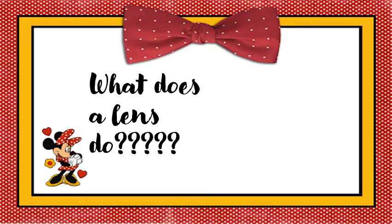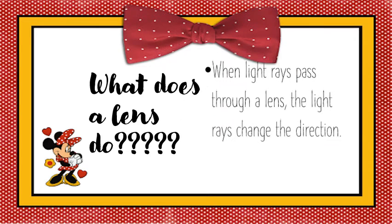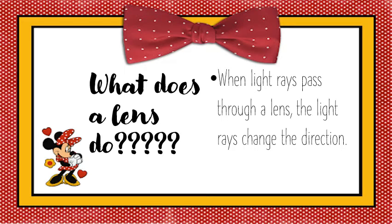Why do we need to learn about a lens? What does a lens do? When light rays pass through a lens, the light rays change direction. That is why we learn about lenses. A lens is a transparent object — made of glass, plastic, or some other transparent material — that must be curved, and it changes the direction of light.